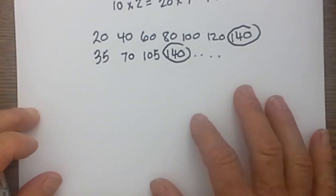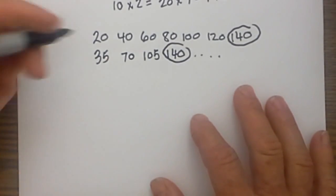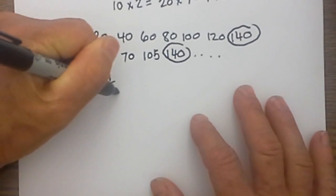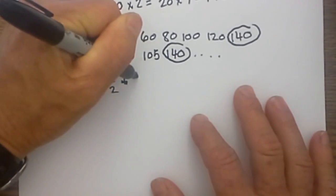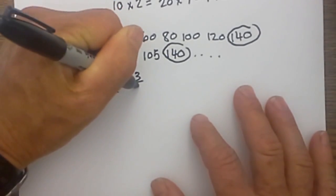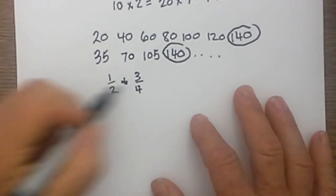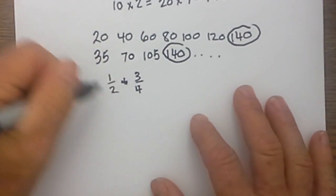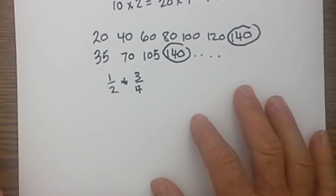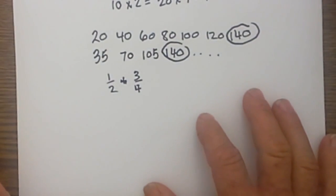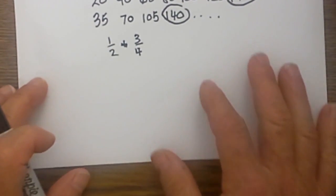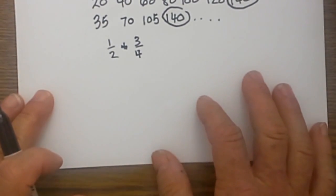The traditional method works and in certain situations it is a little easier like if you have 1 half plus 3 fourths. And then the last technique is creating a factor tree.